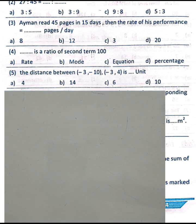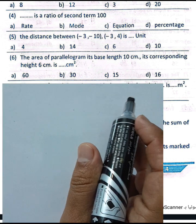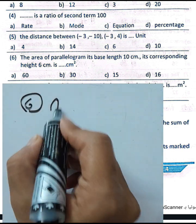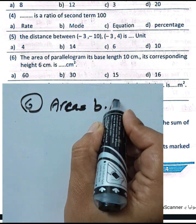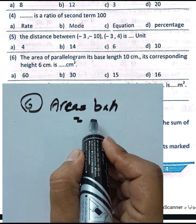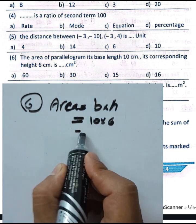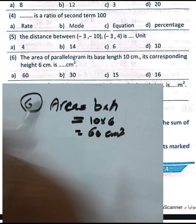Choose letter B. Question number six: the area of a parallelogram with base 18 cm and corresponding height 6 cm. The area equals base times corresponding height. The base is 10 and height is 6, so 10 times 6 equals 60 square centimeters.